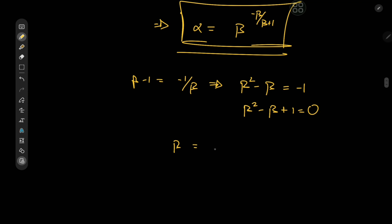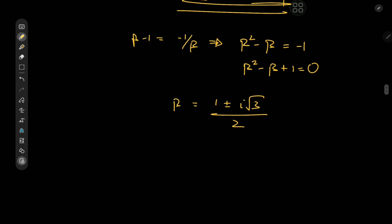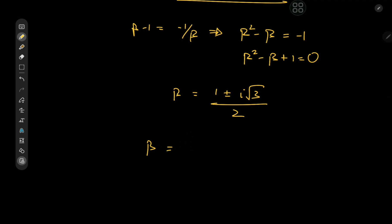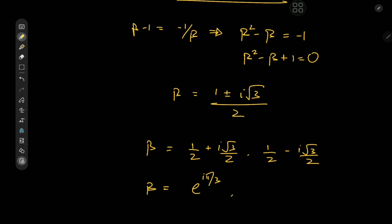Now for the reliable quadratic formula. β = (1 ± √(1−4))/2 = (1 ± √(−3))/2 = (1 ± i√3)/2. So β = 1/2 + i·√3/2, or β = 1/2 − i·√3/2. Converting to polar form: since 1/2 = cos(π/3) and √3/2 = sin(π/3), we have β = e^(iπ/3), and the other value is the complex conjugate β = e^(−iπ/3).